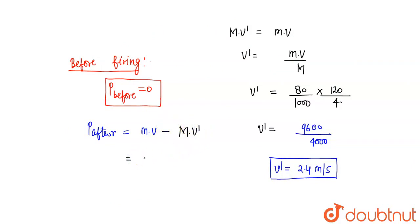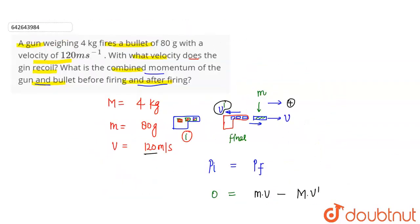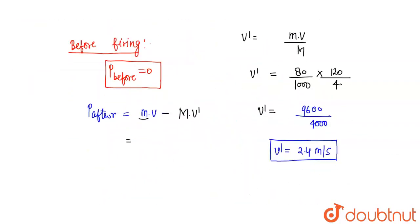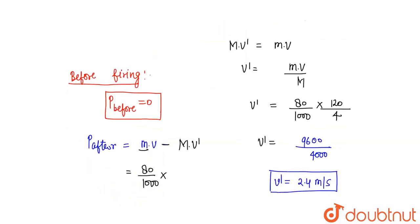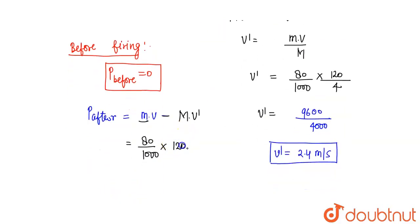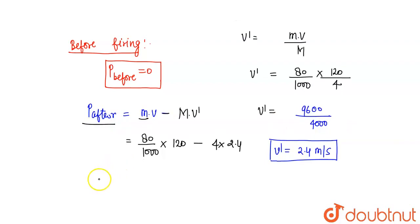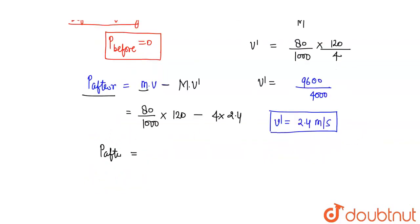Value put karo: bullet ka mass 80 gram, toh 80 divided by 1000 kg, aur uski speed 120 m/s. Minus: mass of the gun 4 kg into v-dash jo aap calculate kar chuke ho — 2.4 m/s. Yahan se momentum after the firing calculate hoga.